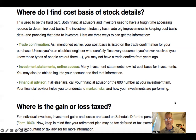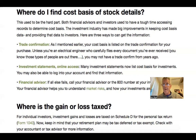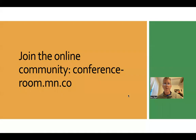So finally, where are gains and losses taxed? They're taxed on Schedule D of the personal tax return. Keep in mind that those retirement plan dollars may have gains that are tax-deferred or tax-exempt. Check with your accountant or tax advisor to get information on whether it's taxable now. For more information on accounting and finance, you can go to conferenceroom.com.